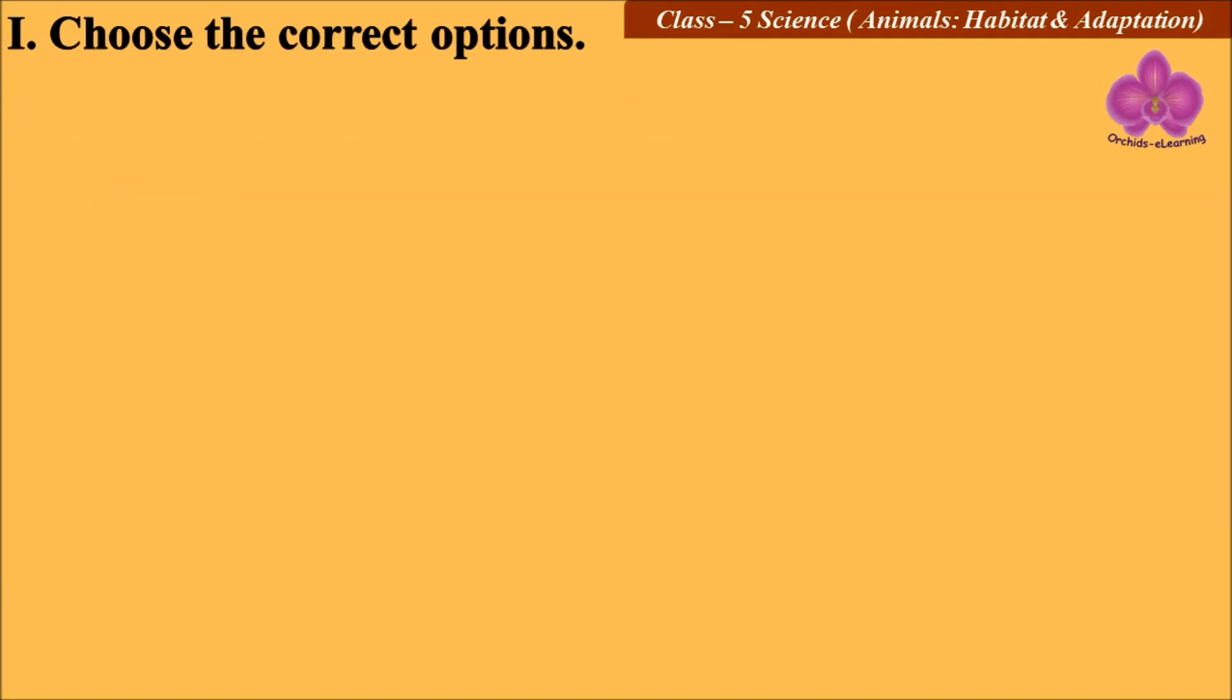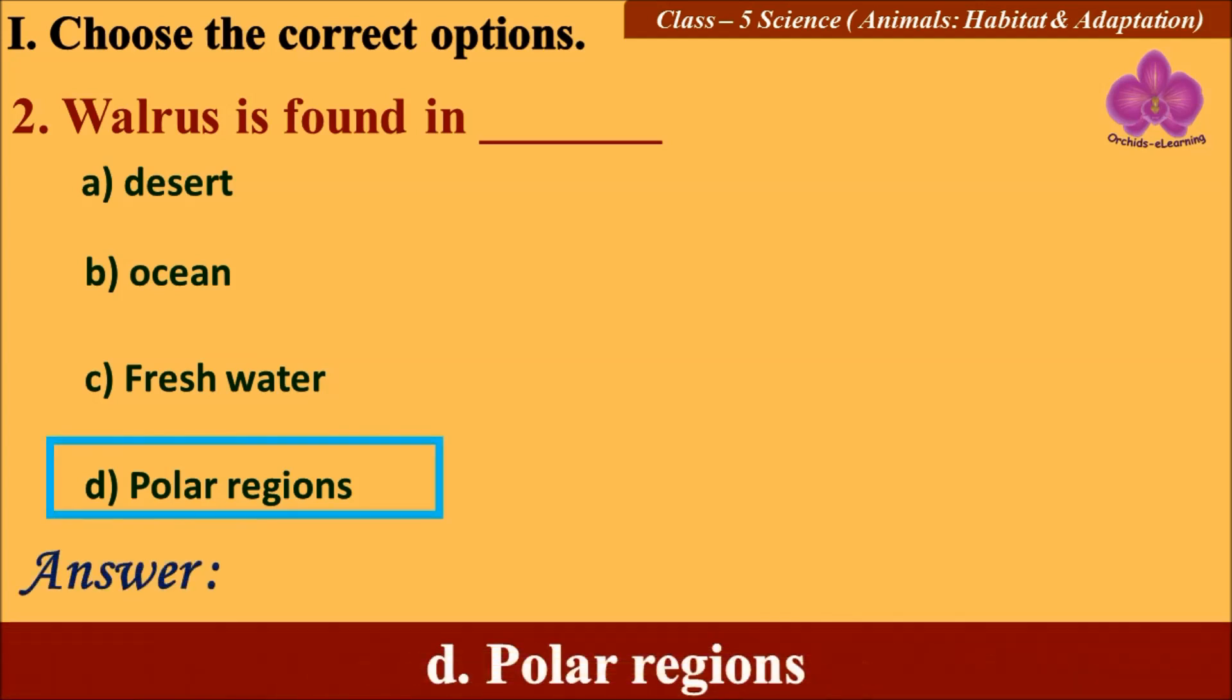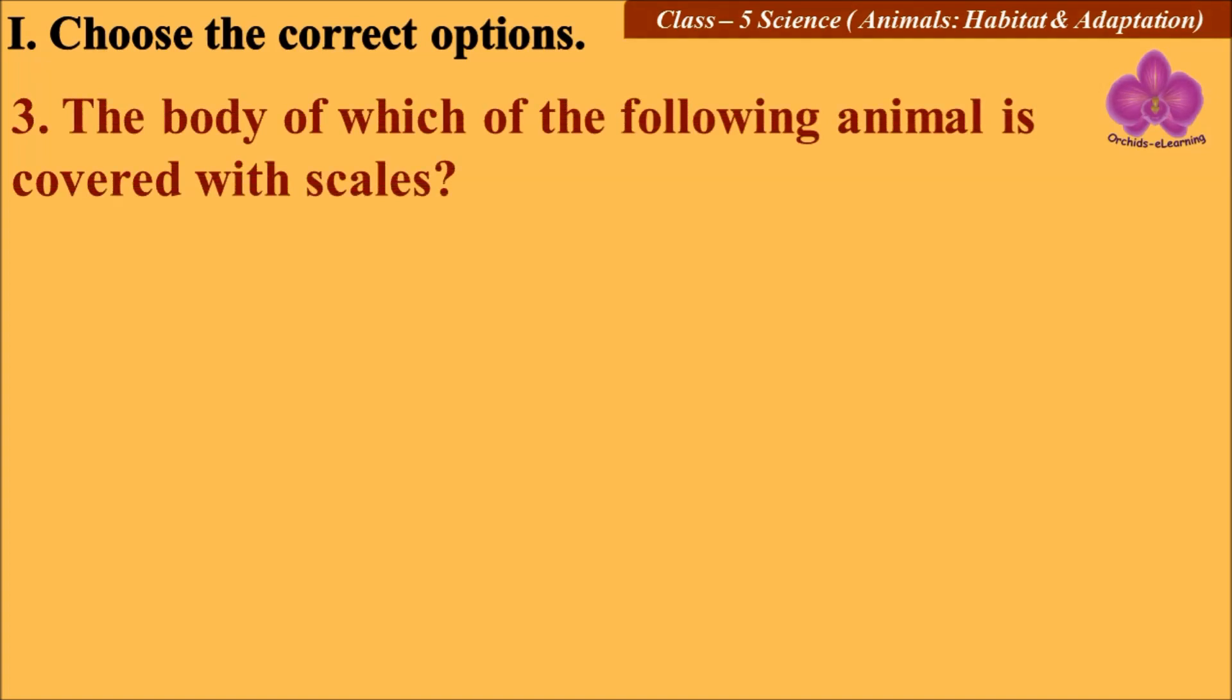Question number two: Walrus is found in ____. Look at the options: A) Desert, B) Ocean, C) Freshwater, and D) Polar regions. The answer is D) Polar region.